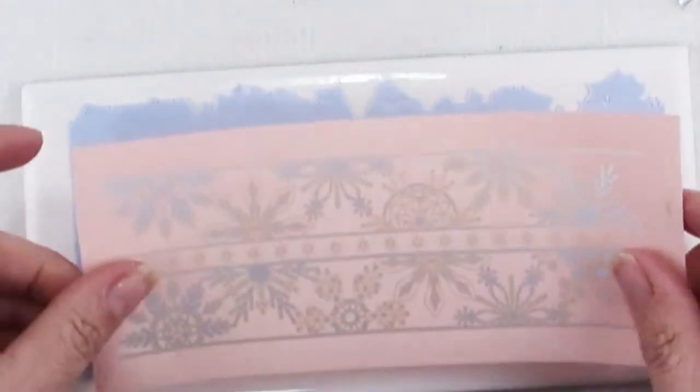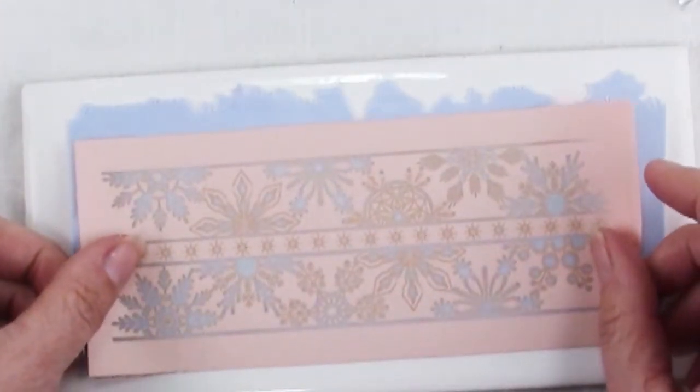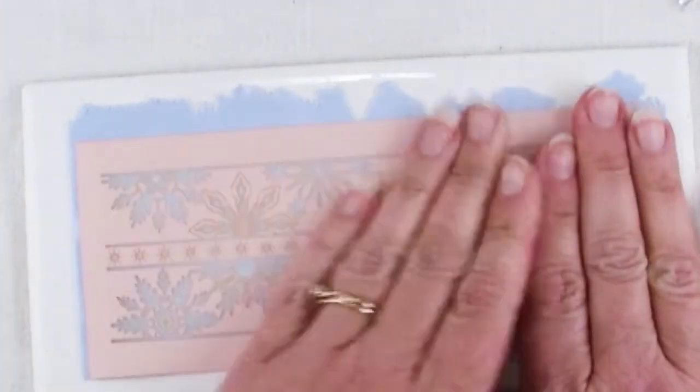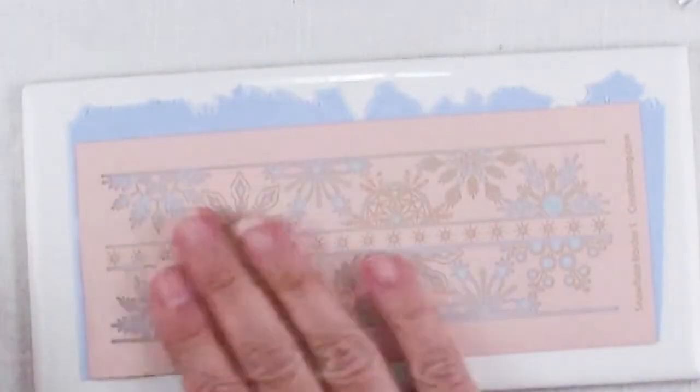You want to roll it out to somewhere around like seven by three inches and this will actually give you enough to decorate two candle holders.